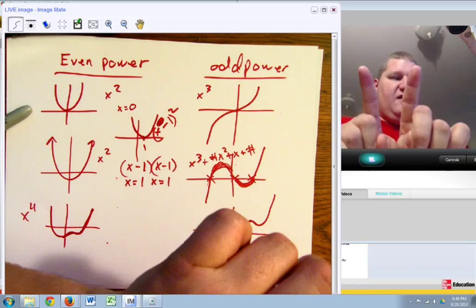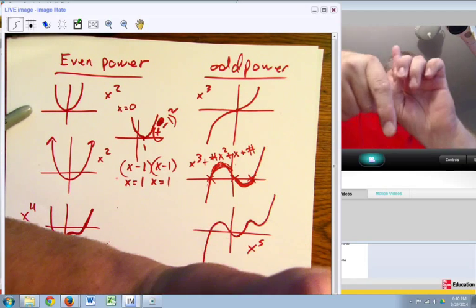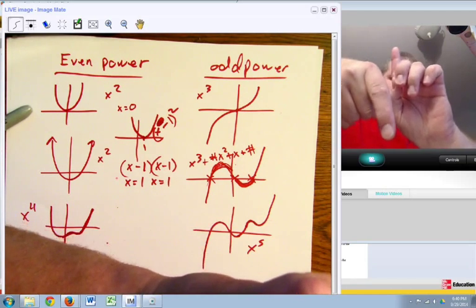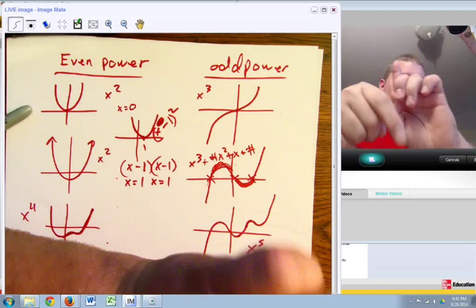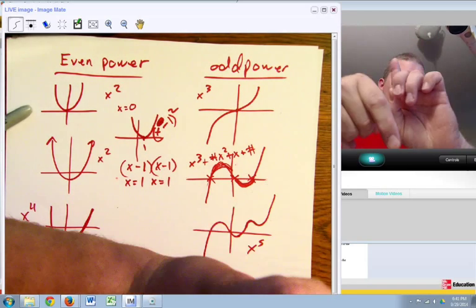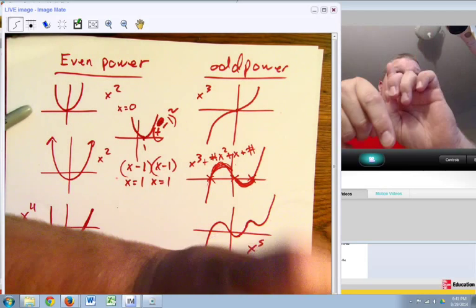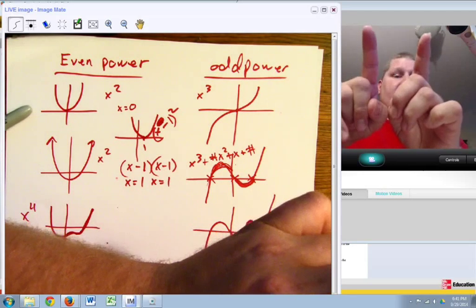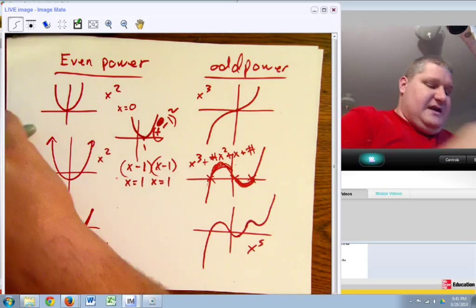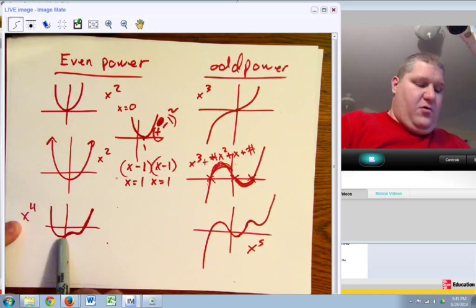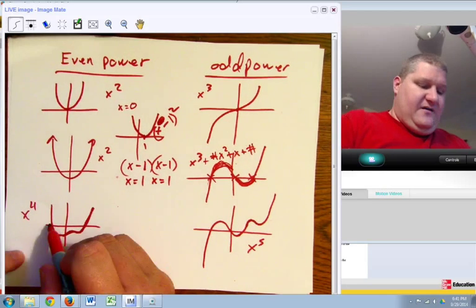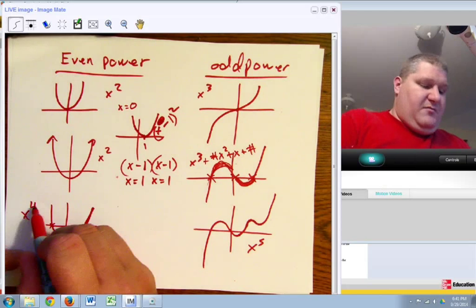So you have even functions versus odd functions. So if I have squared, cubed, fourth, fifth, sixth, seventh, eighth. Okay, so in this case, even function of four.